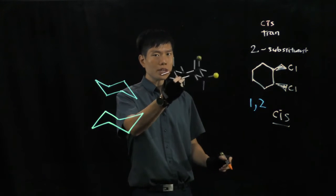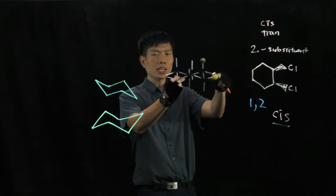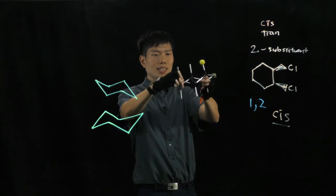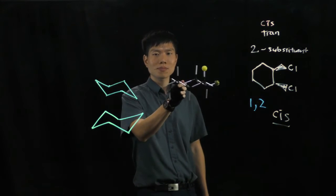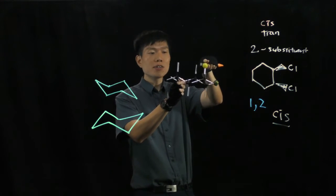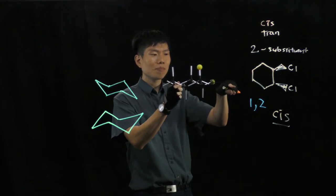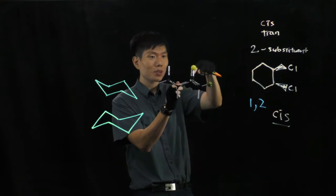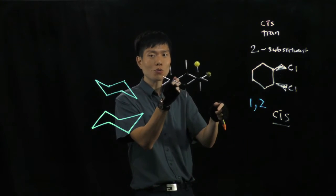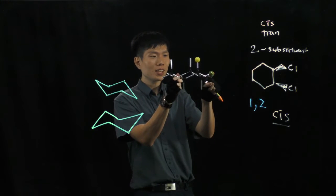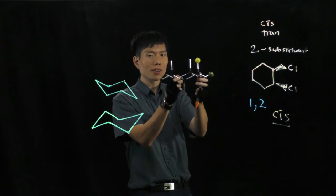When I do a ring flip, you see this yellow ball here, it has gone up to the axial position, whereas the other ball points to the side, but yet these two still remain cis because it's up, up. Now do a ring flip once more, observe carefully the yellow ball and the green ball.